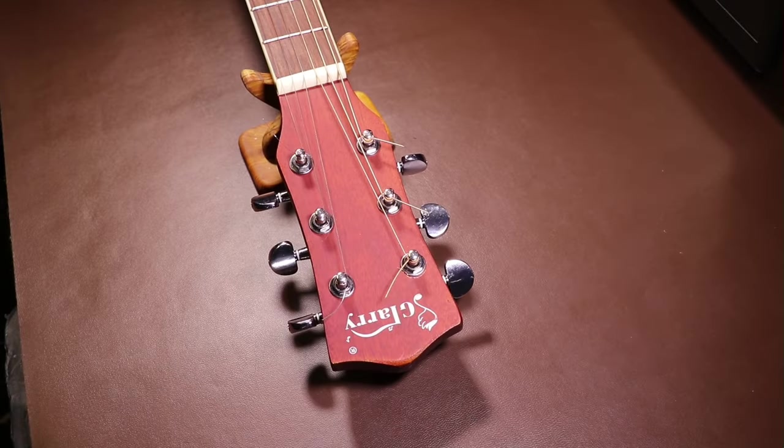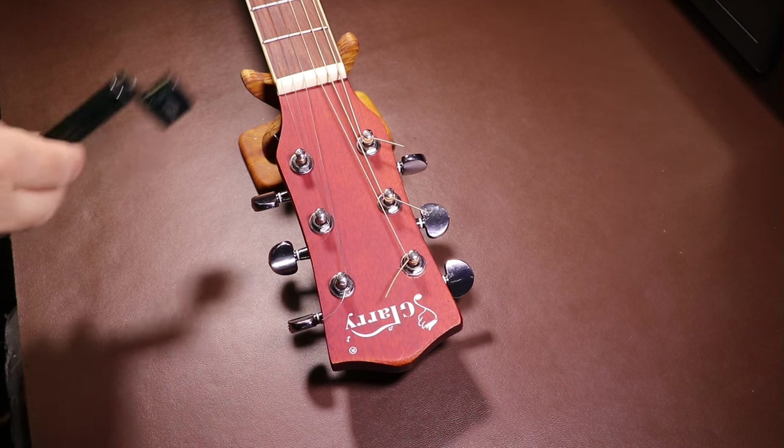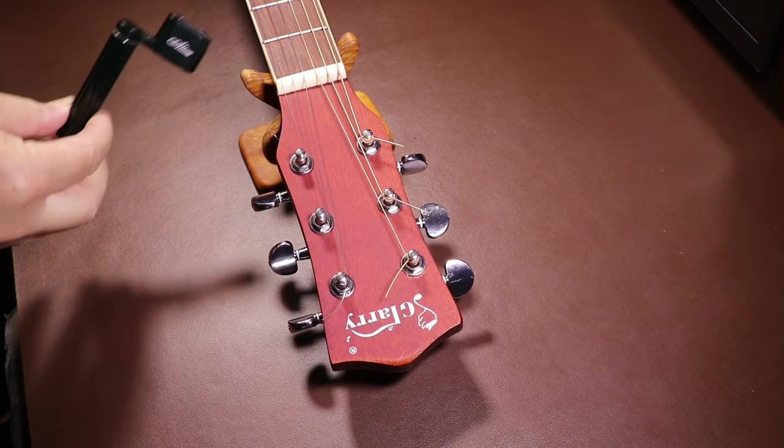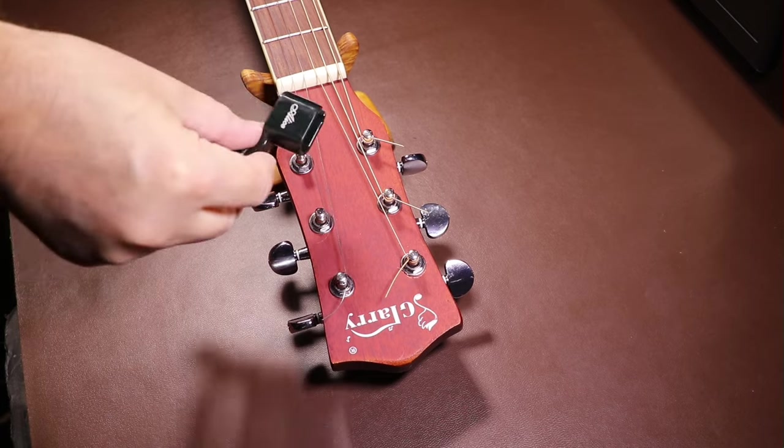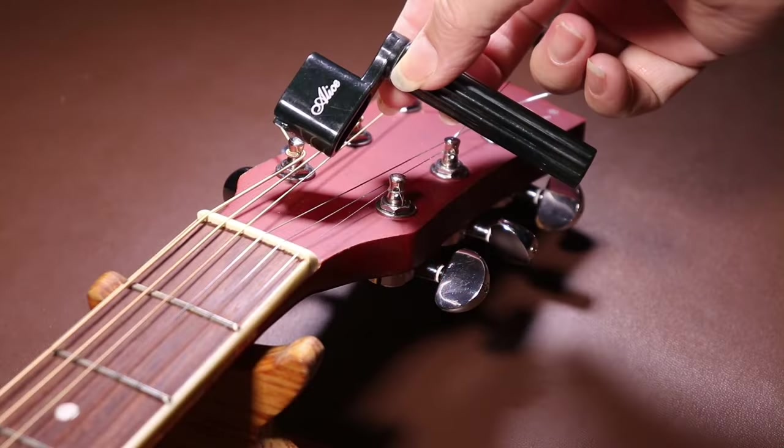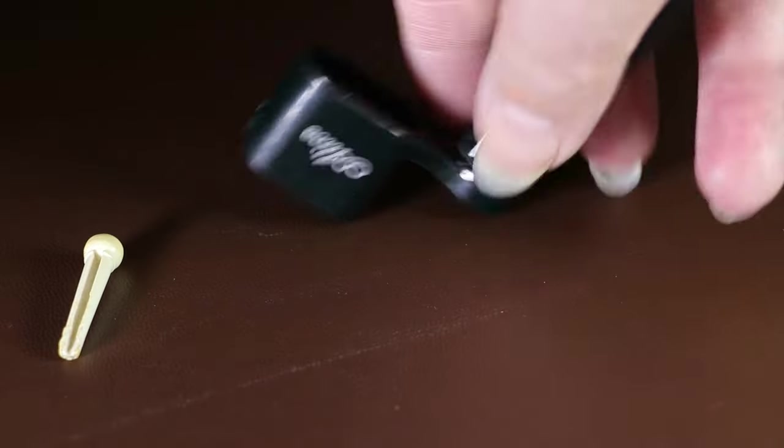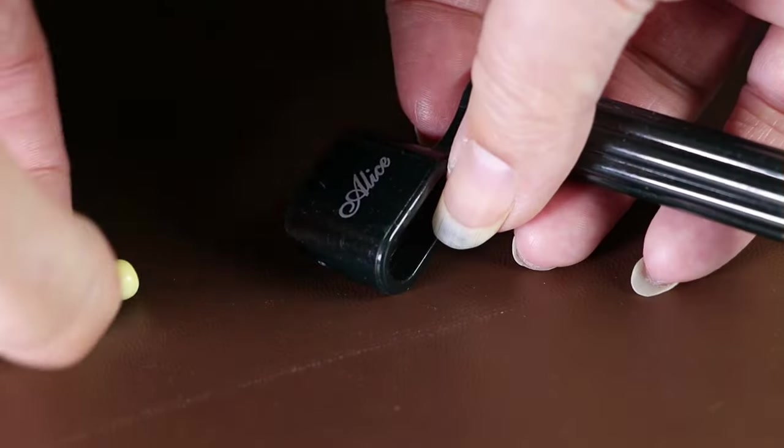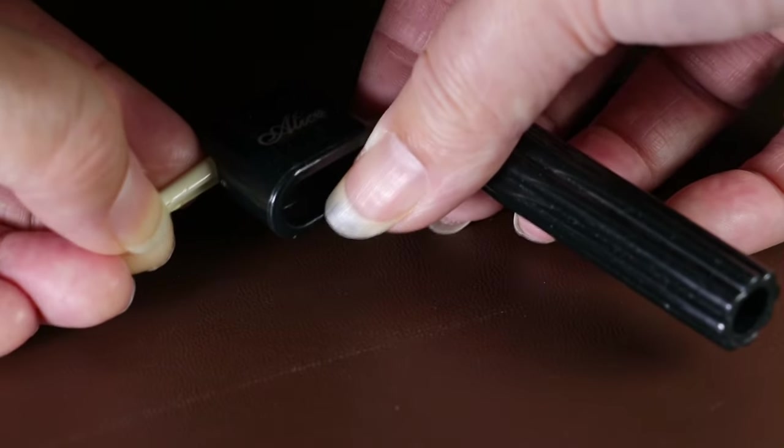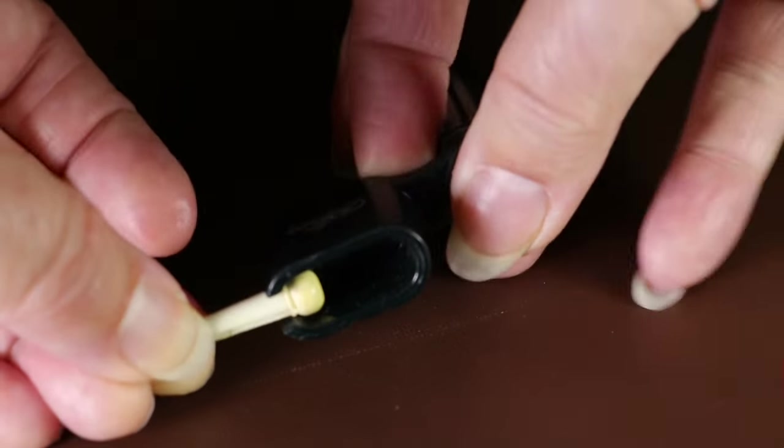Right, how to fit a bone saddle. The first thing I need to do is remove all the strings. And to help me with this, I'll be using a string winder. Which is a really cheap tool you can get at any music shop or your favourite store on the internet. On some string winder tools, you also get a peg removal tool for taking the pegs out of the other end of the guitar.